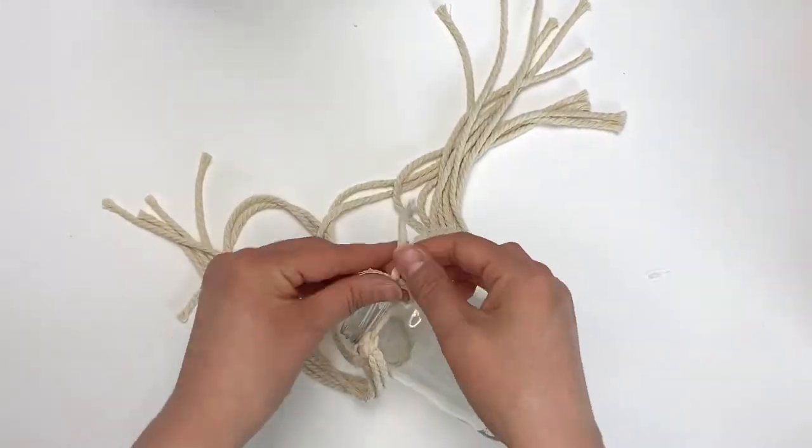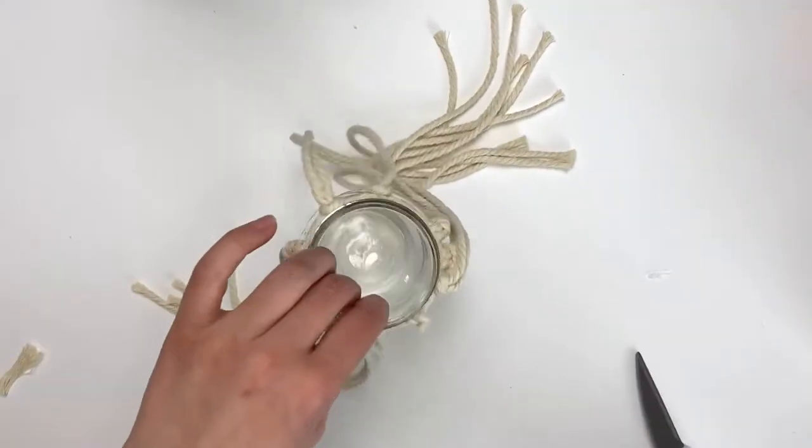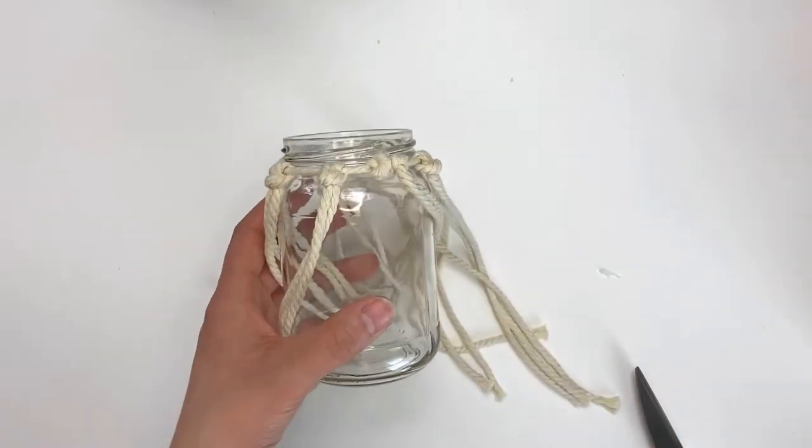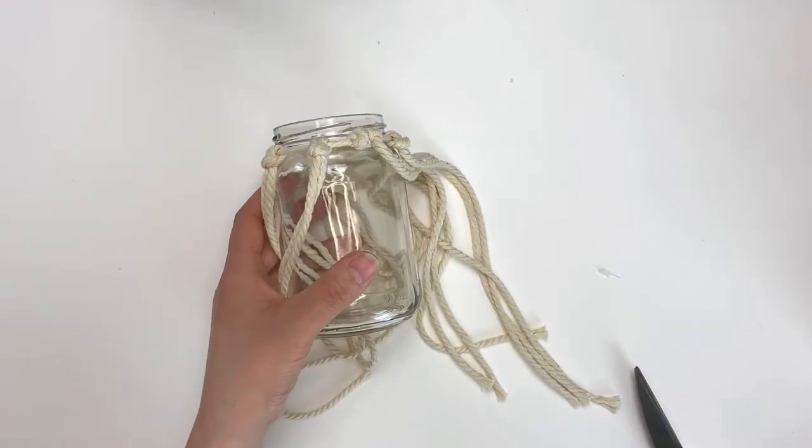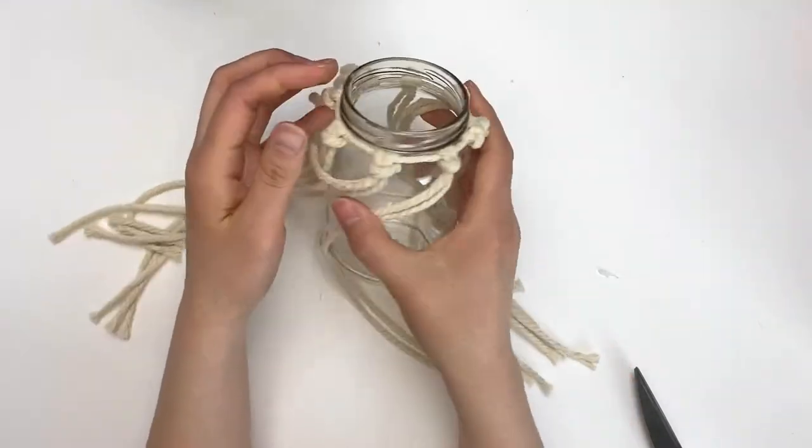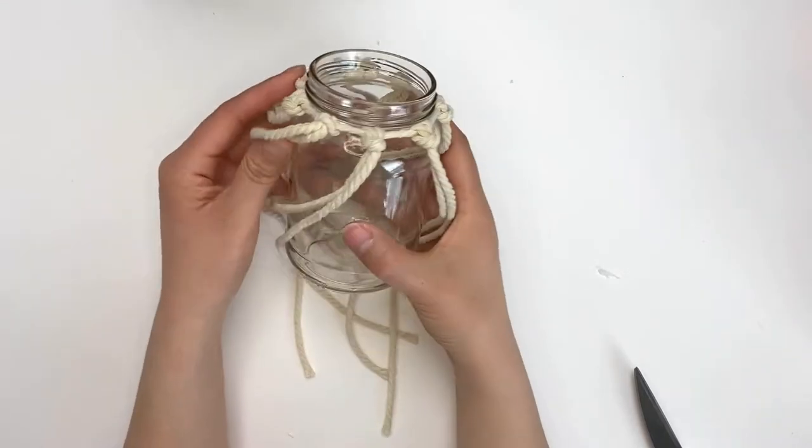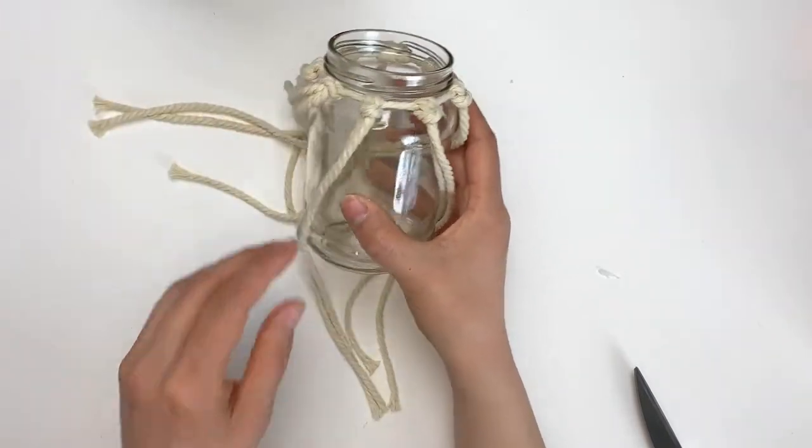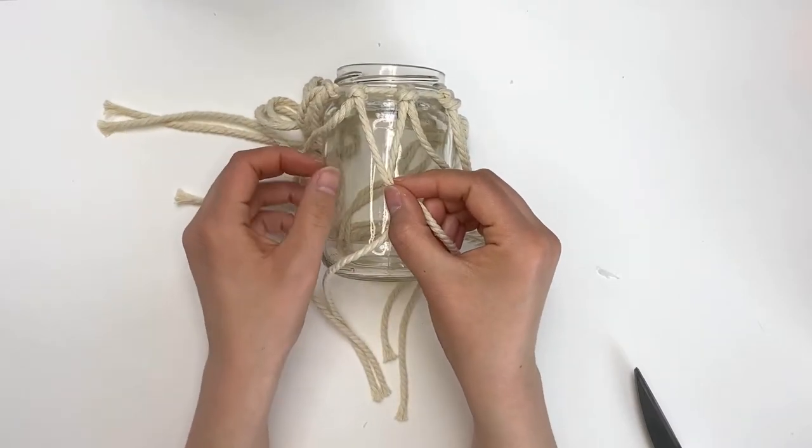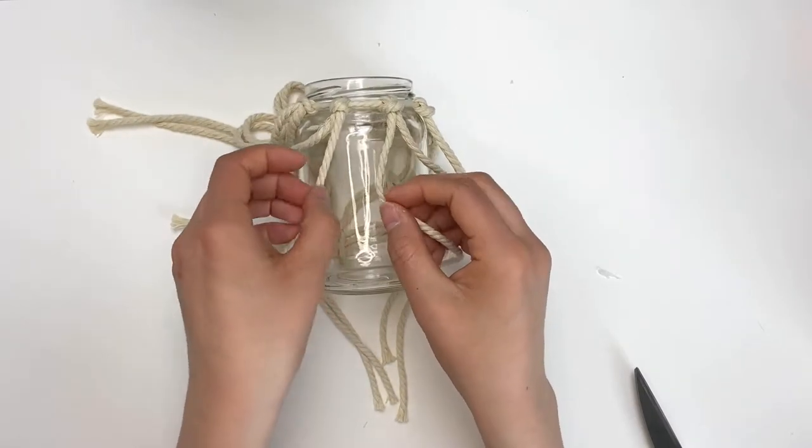Once your cords are all attached, you can go back to that cord that's tied around the rim of the jar and make sure that it's nice and tight. And again, make sure that these cords are evenly spaced out around the jar so that we can start making our knots and creating our little fishnet around the jar. So each cord that we attached has two strands—take one strand from each attached cord and create two knots.